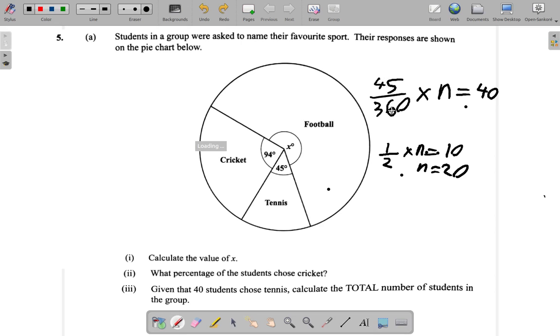45 over 360 of the entire group, N, is 40. I'm going to find out what is N.